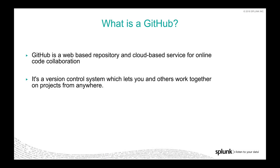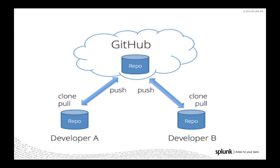What is GitHub? GitHub is a web-based repository and cloud-based service for online code collaboration. It's a version control system which lets you and others work together on projects from anywhere. As you can see from here, GitHub users can push and pull code directly from the repo.